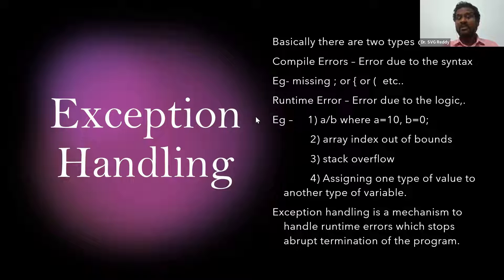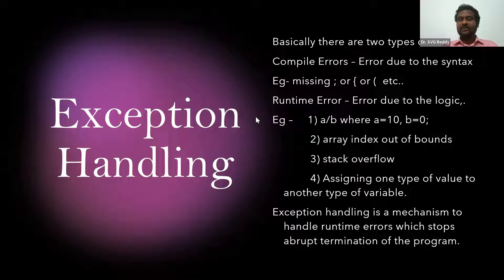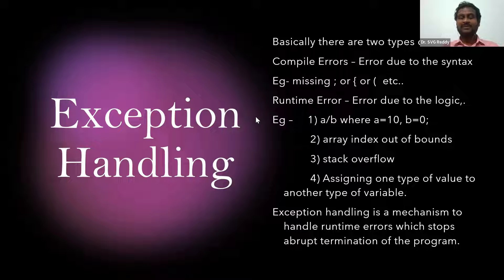Runtime errors include: division by zero, array index out of bounds — where for example there is an array of only size five but the program tries to insert a sixth value; stack overflow, where there is a stack of only limited size but you are still trying to push values; and number mismatch, where you assign one type of value to another type of variable, like putting an integer value into a string variable. For all these runtime errors, exceptions are raised and the system can't understand what to do.